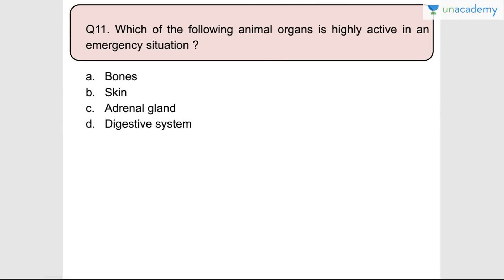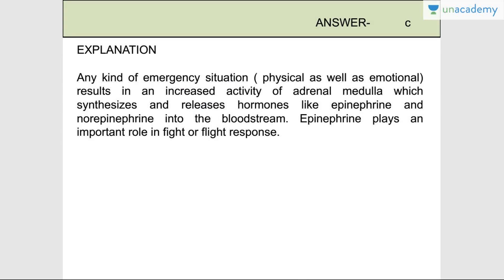Question number eleven: Which animal organ is highly active in an emergency situation? The answer is the adrenal gland because it releases epinephrine and norepinephrine hormones. Any kind of emergency situation - physical, emotional, stress, anxiety - results in increased activity of the adrenal medulla, which synthesizes and releases hormones like epinephrine and norepinephrine into the bloodstream. You might have heard about the fight-or-flight response - that is because of these hormones.